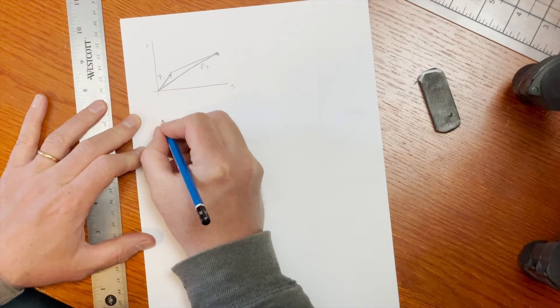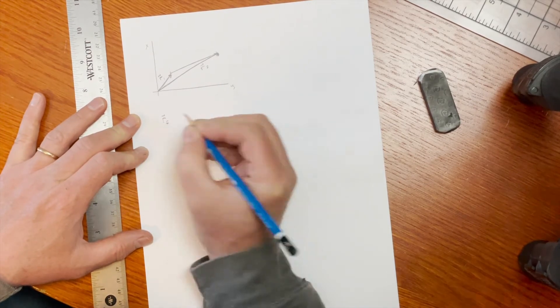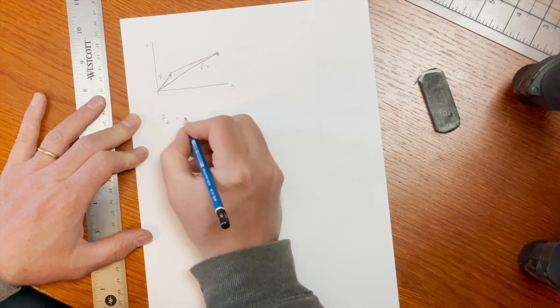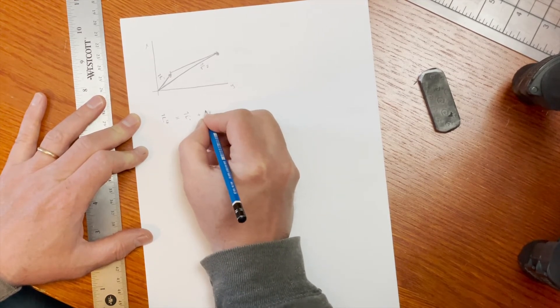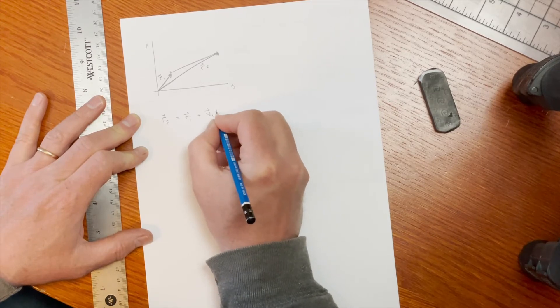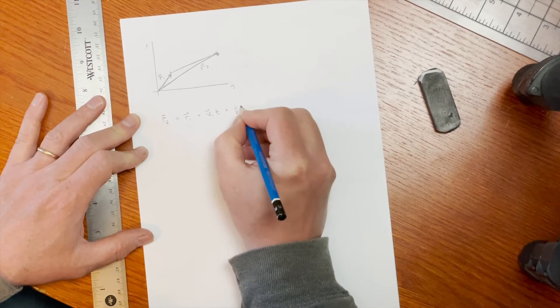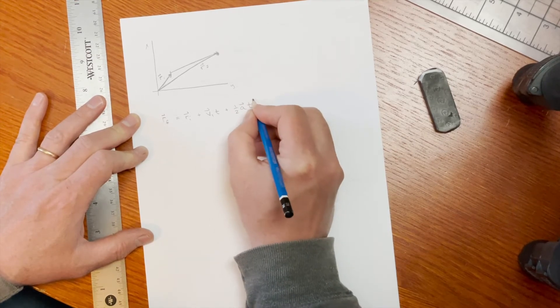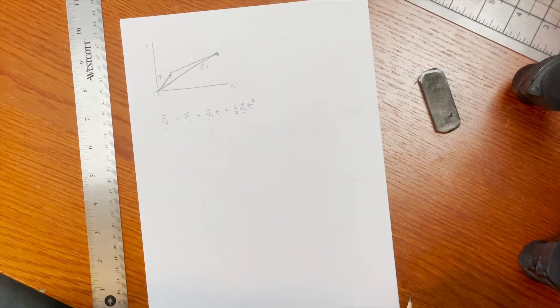And the way we would do that is we could say that the final r position is equal to the initial r position plus the initial velocity vector times time plus one half times the acceleration vector times time squared. Now these are all vectors, which means I actually have three equations if I'm in three dimensions.